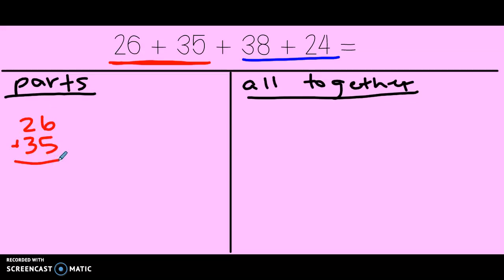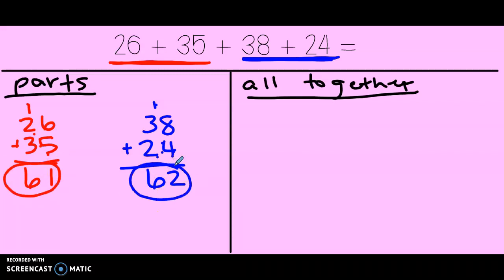Let's start with the first two: 26 plus 35. Here we go: 6, 7, 8, 9, 10, 11. I made a new 10. 3, 4, 5, 6. So the first two numbers add to get me 61. Now let's add the second two numbers: 38 plus 24. 8, 9, 10, 11, 12. I made a new 10. 3, 4, 5, 6. 62. Now I added the first two numbers and I added the second two numbers.